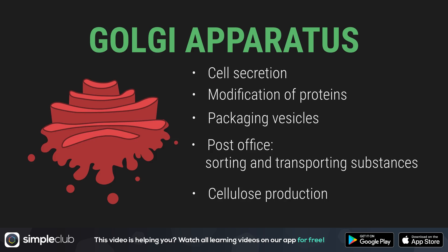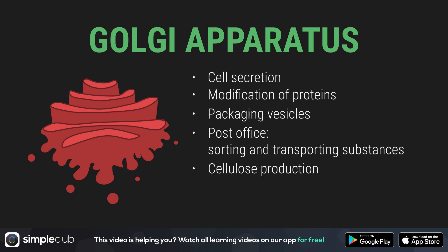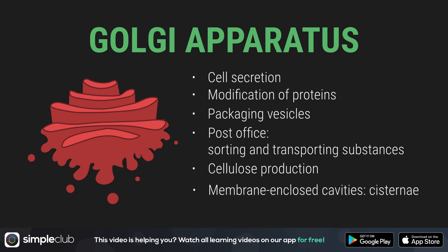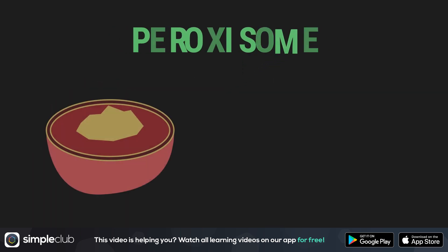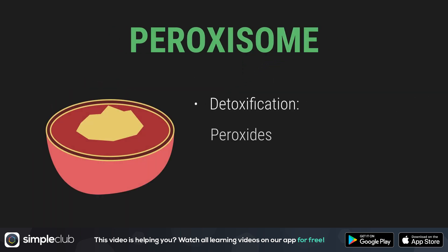The Golgi apparatus is responsible for cell secretion and the modification of proteins. In this apparatus, vesicles are packaged for safe transport of the synthesized substances to their destination. It is about sorting and transporting substances — basically like a post office. Moreover, it is important for synthesis and cellulose. The Golgi apparatus consists of some membrane-enclosed cisternae — cavities — that cluster together with dicosomes. Depending on the cell, the number of dicosomes can vary.